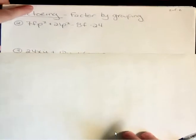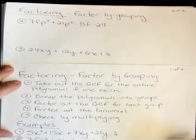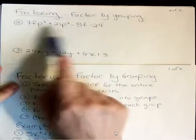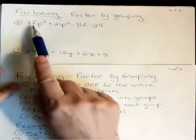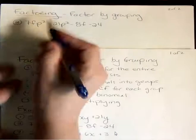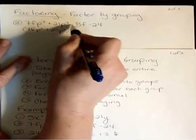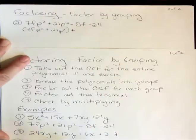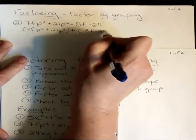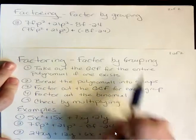Let's take a look at the second one. We want to take out the greatest common factor for the entire polynomial if possible. The numbers have no common factor, there's a p in a couple of them, and an f here but no f or p everywhere. So there's no common factor for the entire thing. I'm going to group it: the first group is 7fp² and 21p². Remember there always needs to be a plus in between — that minus sign belongs to the next term; the coefficient is negative 8. So that goes inside the parentheses.